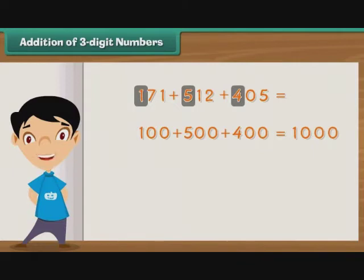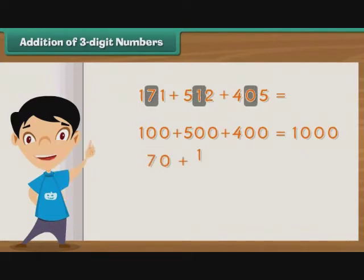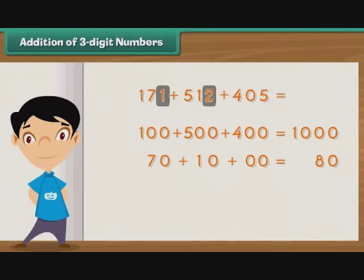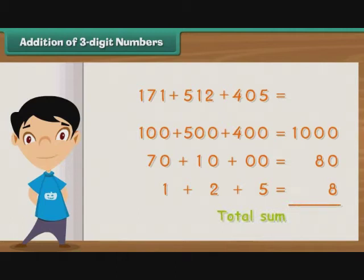Now we proceed to add the digits at the tens place, that is, 7, 1, and 0. We add 70, 10, and 00 to get 80. Finally, we add the digits at the ones place, that is, 1, 2, and 5, to get 8. Now we need to add 1000, 80, and 8 to get the sum of 171, 512, and 405. The result of the addition is 1088.